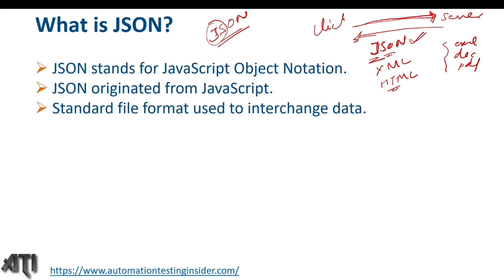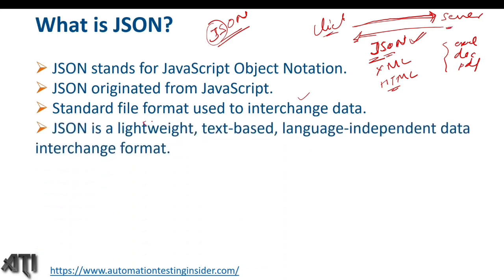JSON is a standard file format used to interchange data between client and server. JSON is a lightweight, text-based, language-independent data interchange format. Language-independent means we can use JSON with any programming language — Java, C#, Ruby, Perl, or any other. Although it is derived from JavaScript, we can use this JSON file format with any programming language. The file extension is .json.